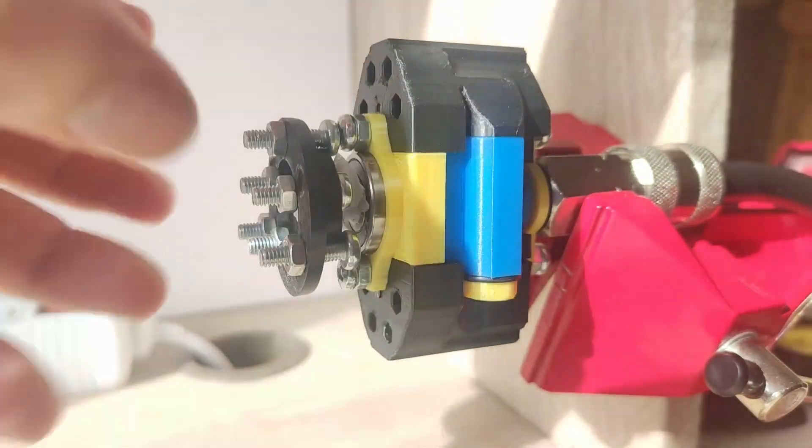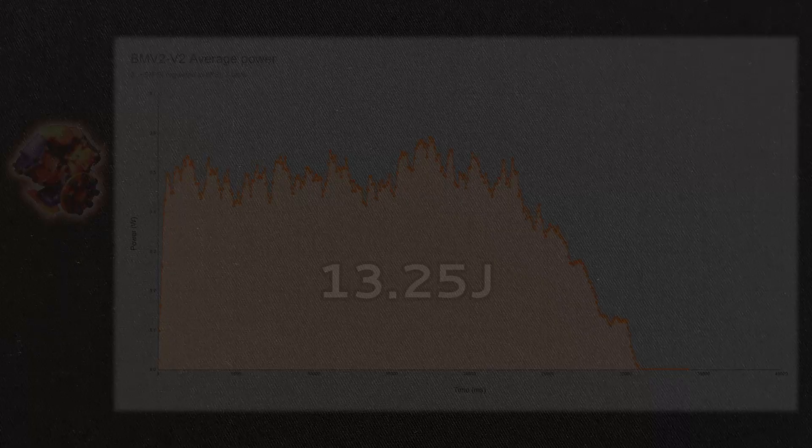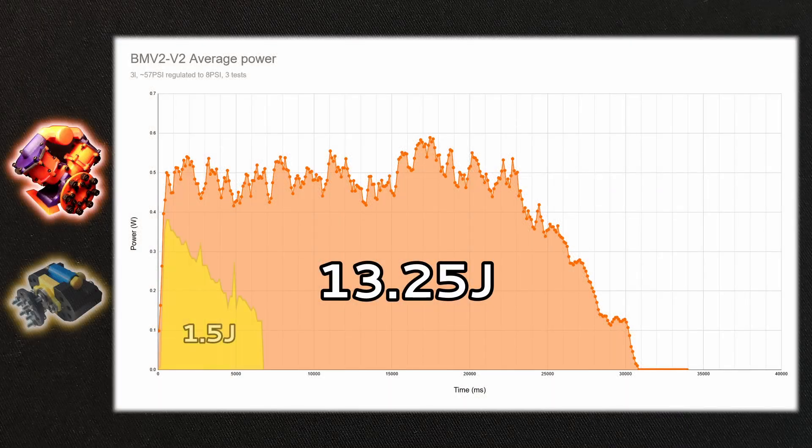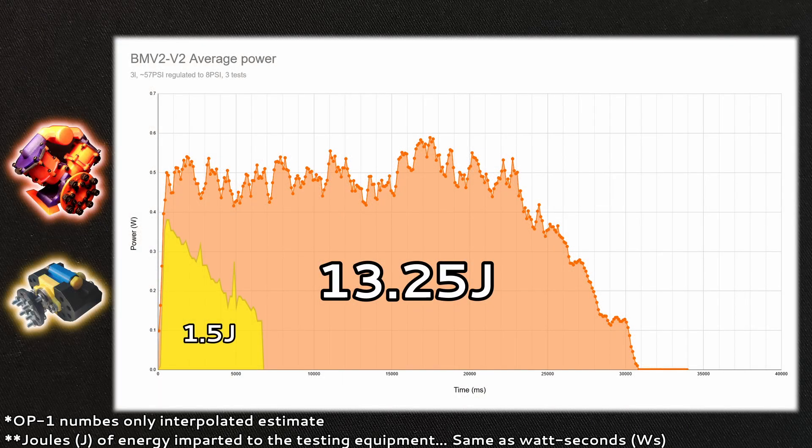Unfortunately, since the OP1 is non-functional, I was not able to properly quantify this efficiency increase. However, simply looking at the runtime, we can already see that the MV2 is much more efficient at using the available air.